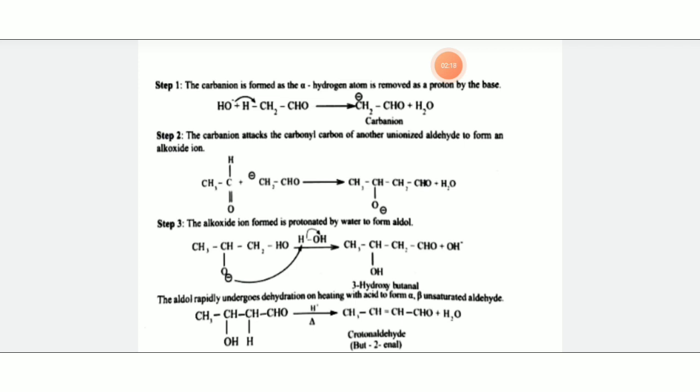Next step: aldol rapidly undergoes dehydration on heating with acidic conditions to form alpha-beta-unsaturated aldehyde. We are using acetaldehyde to form crotonaldehyde.